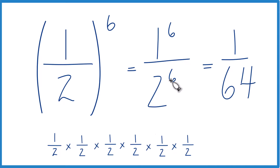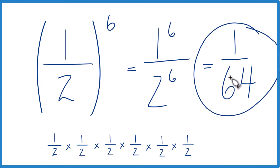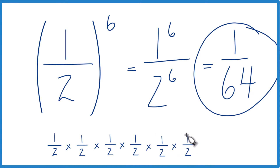So in answer to our question, when we take one-half to the sixth power, we end up with the fraction one sixty-fourth. And that makes sense — we're taking a fraction of a fraction of a fraction of a fraction of a fraction of a fraction, so this number should get pretty small, which it does.